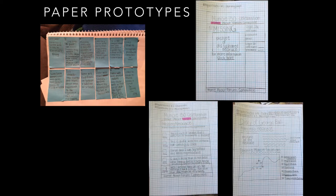The storyboard has twelve steps. It has an entryway at the beginning, the different parts of the story in each of the rectangle boxes, and then the final is the ending message.